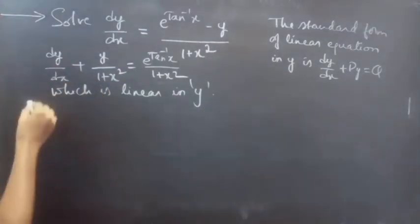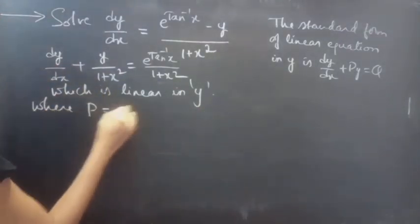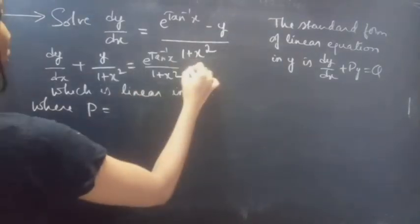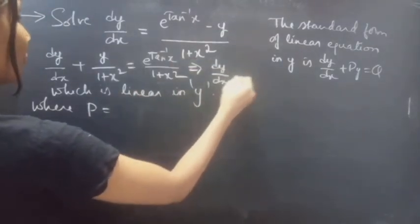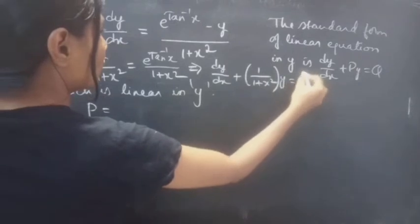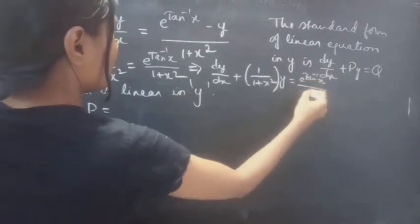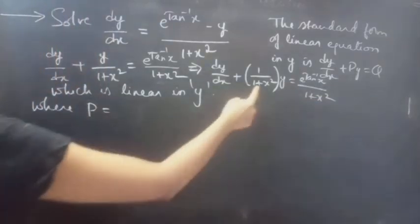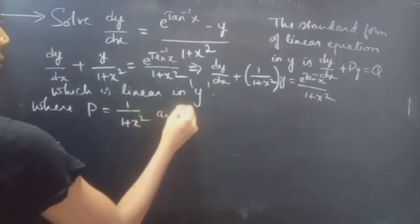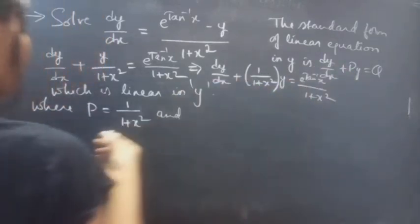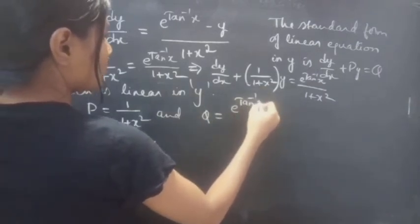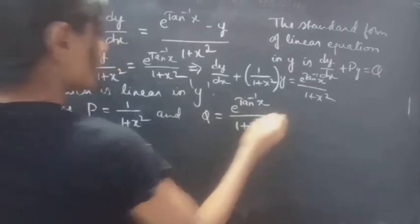By comparing these two, we will get P and Q. We can write this as dy/dx plus (function of x) times y equals e^(tan⁻¹x)/(1 + x²). Now it is easy to identify: P equals 1/(1 + x²), that is the coefficient of y, and Q equals e^(tan⁻¹x)/(1 + x²).